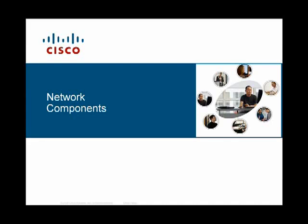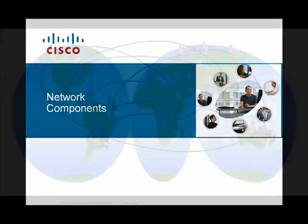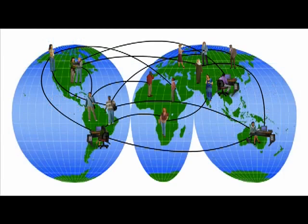Welcome! This video defines the key components of a data network and demonstrates how data communication takes place over a network. In order for us to send messages from one location to another, whether it's an instant message or an email, we rely on the web of interconnected networks.